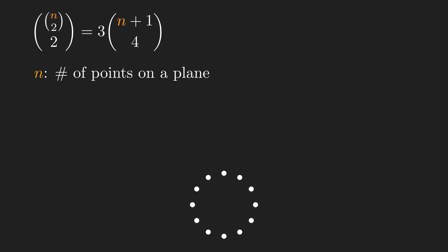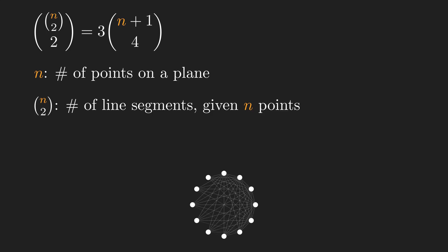Then, n choose 2 will be the number of pairs of all these points, or in other words, the number of all line segments we can draw by connecting any pair of these points. Here, you can see 12 points and the number of line segments is 66.